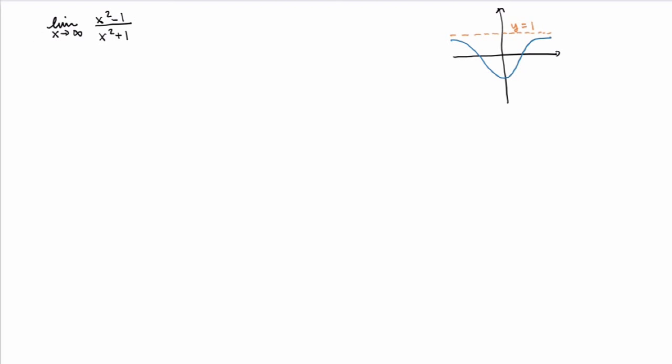Taking x to be very large, if I just substitute a large number I get something very large over something very large, which doesn't tell me anything — it could be large, small, zero, or infinite. The trick is to rewrite the rational function by dividing both numerator and denominator by x squared, giving 1 minus 1 over x squared, all over 1 plus 1 over x squared. Now, substituting a very large x, 1 over x squared becomes very small, so 1 minus a very small number is just 1, and similarly the denominator 1 plus a very small number is just 1. So the limit as x goes to infinity is 1 over 1, which is 1 — the answer we got from the graph.